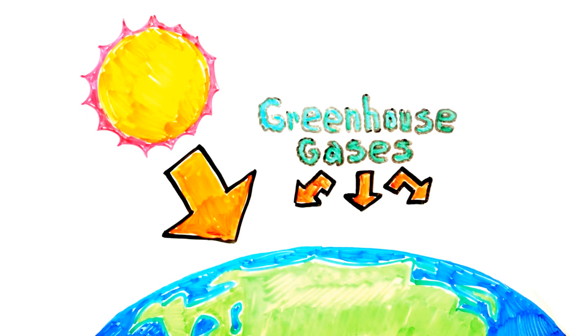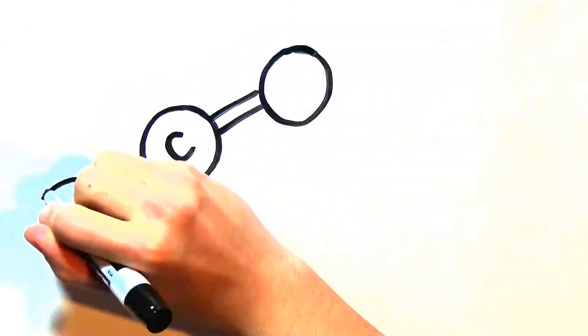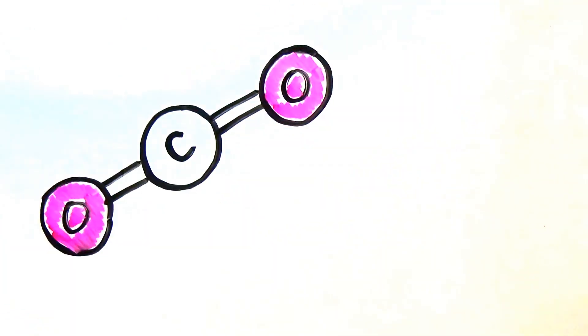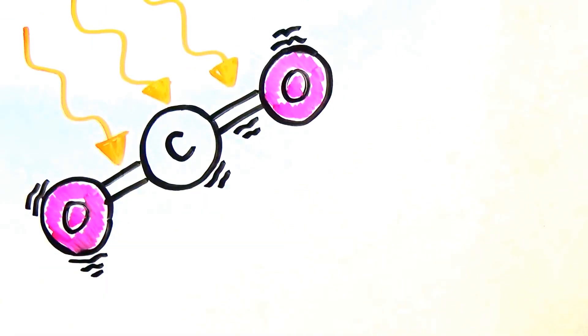In the same way, any gases which have three or more atoms are able to trap forms of electromagnetic radiation. It works like this: infrared radiation strikes a molecule of carbon dioxide and causes it to vibrate, just like when a bungee cord is stretched.